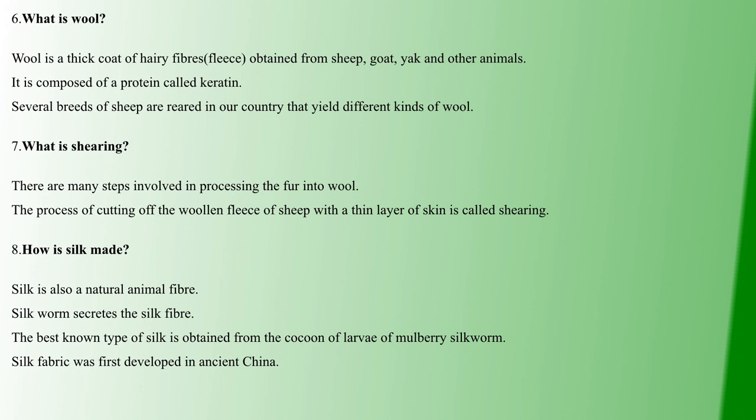Wool processing starts with shearing — the process of cutting off the woolen fleece of sheep. The hairy fibers and a thin layer of skin are cut off. This is called shearing, and the result is called woolen fleece.